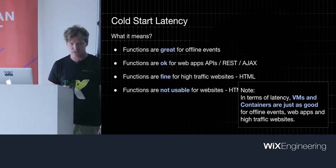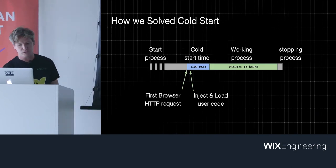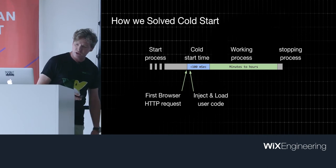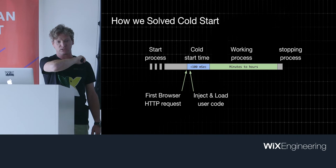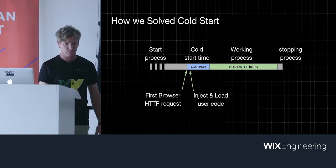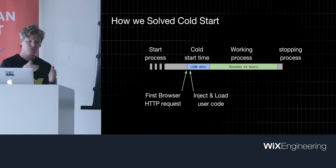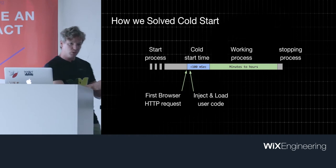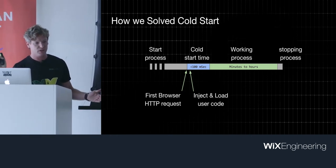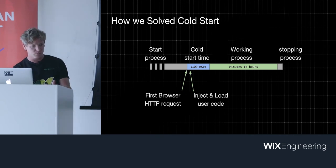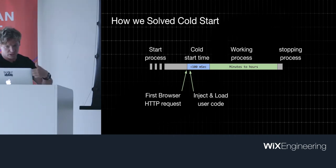What we're doing today sounds very simple but takes time to set up right: we start the process way before a request arrives. But that process is not for a specific user — it's a generic process with no code for a specific user. When a request arrives, we inject the user code into the process — we only give it the personality when we assign it to a website. We have a pool of processes running that are not assigned to any website. When a request arrives for a long-tail website, we inject its code into the process, let it handle the request, keep it alive for a few minutes, then kill it.